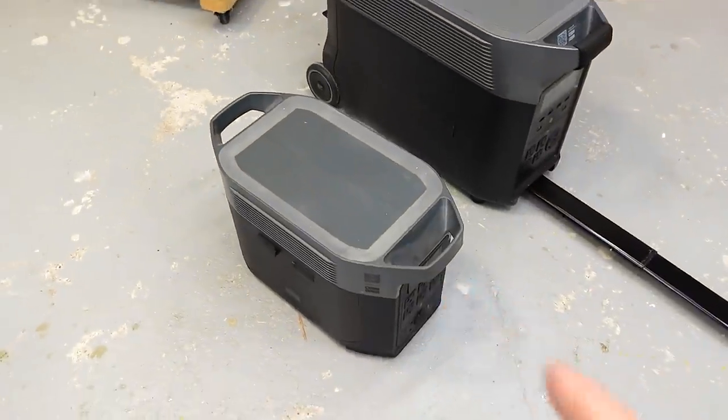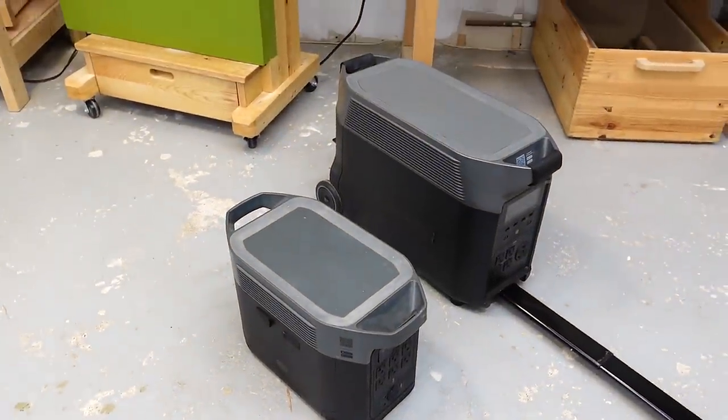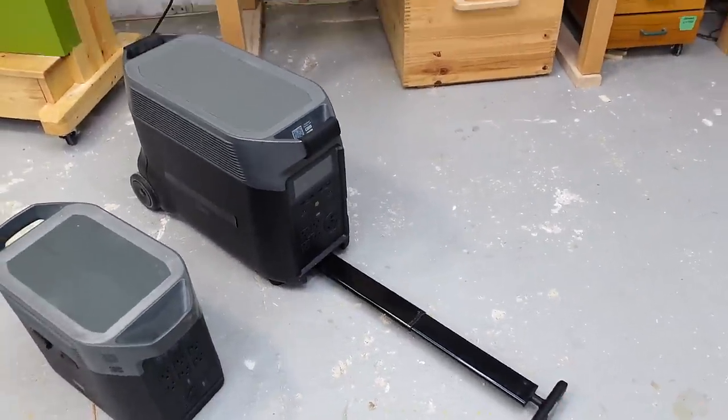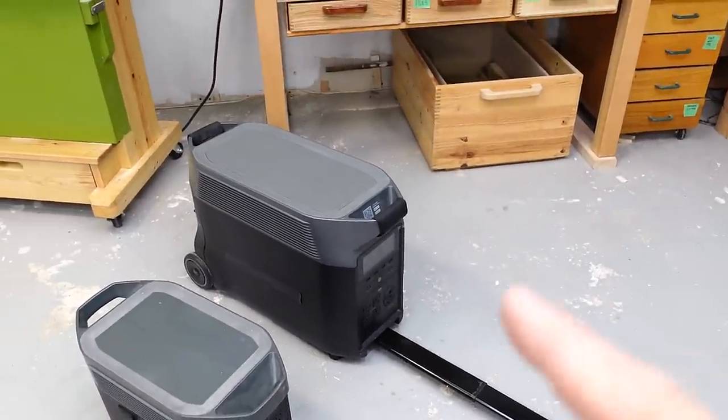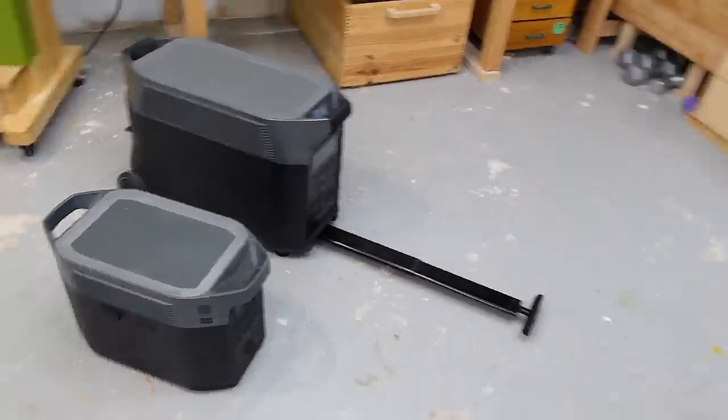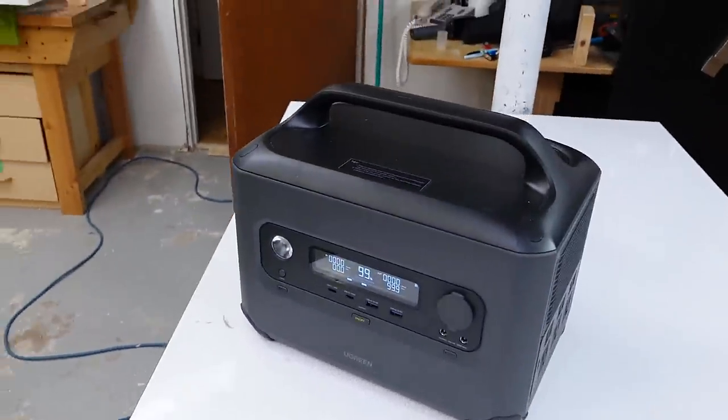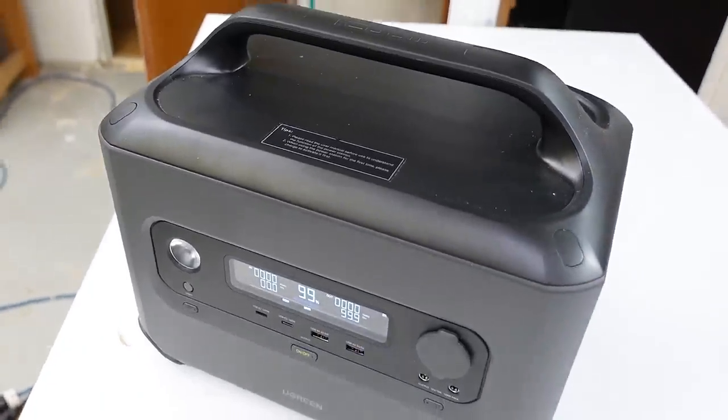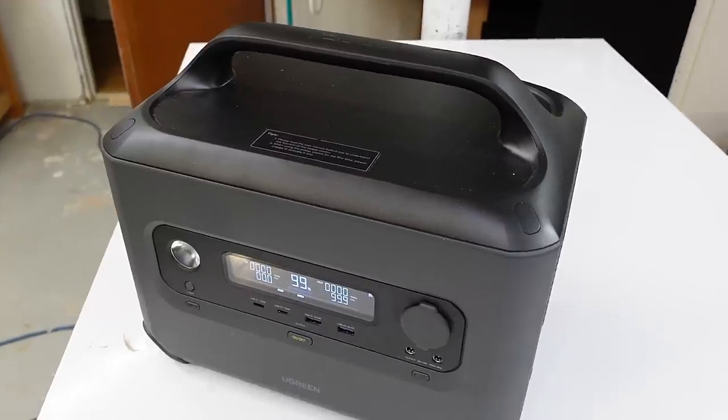This one's got two handles, and you really need both those handles to pick it up. And this one has got wheels on the back, and a little handle to lug it around like a suitcase, because you don't want to pick that one up. These can put out more power and have more battery capacity than the Ugreen, but this one with 1200 watts max output and a kilowatt hour of capacity is suitable for most things already.